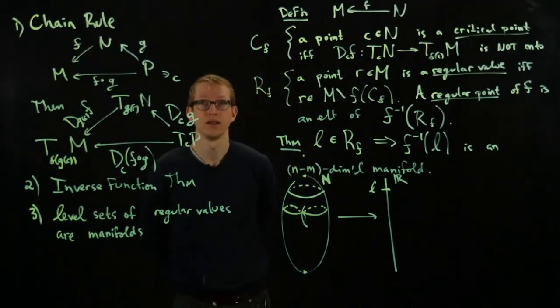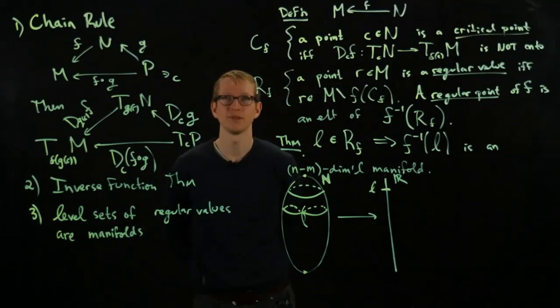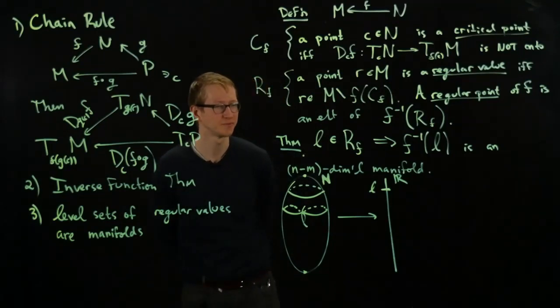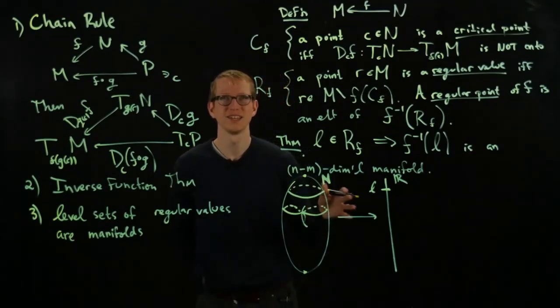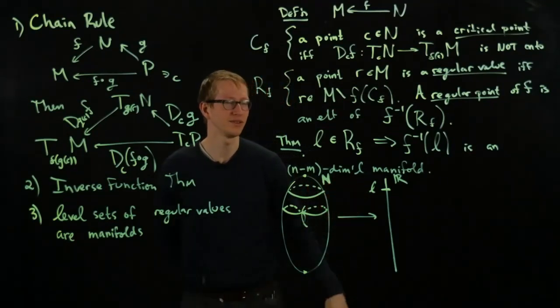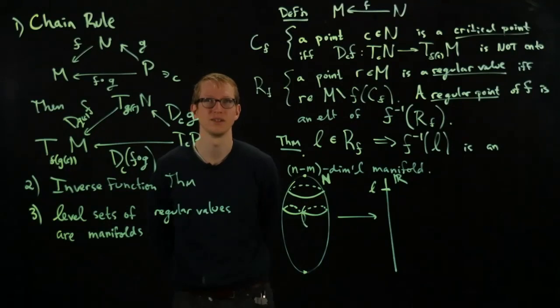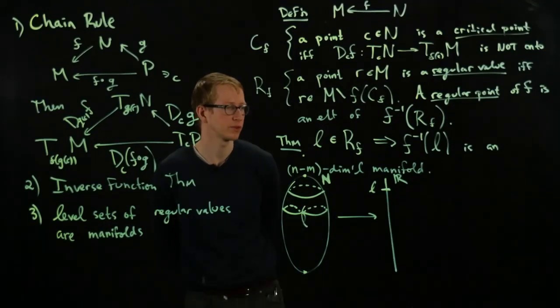But everywhere else, I have an N-M dimensional manifold. Even way up here. Up there, it's the empty set. But the empty set happens to be a manifold of every dimension. I'll let you think about why that's true from the definition. It's a nice way of getting rid of anything. You don't have to worry about the empty set knowing that fact. So again, for the proof of this theorem, I'll refer you to the notes.